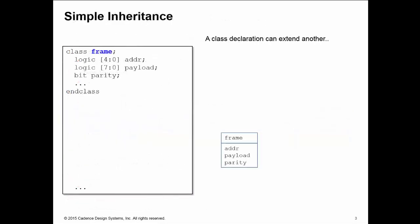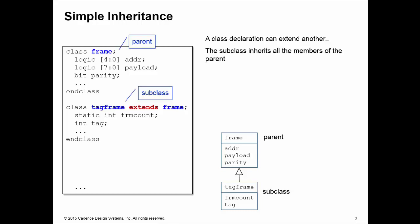In simple inheritance, a class declaration can extend another existing class. Here I declare a class called TagFrame which uses the keyword extends to inherit from the existing class called frame. TagFrame, which is my subclass of frame, inherits all the members of the parent class, which is my frame class.